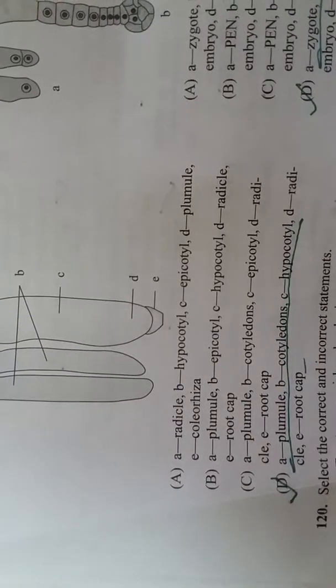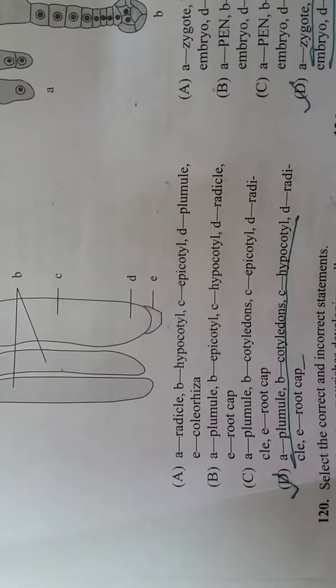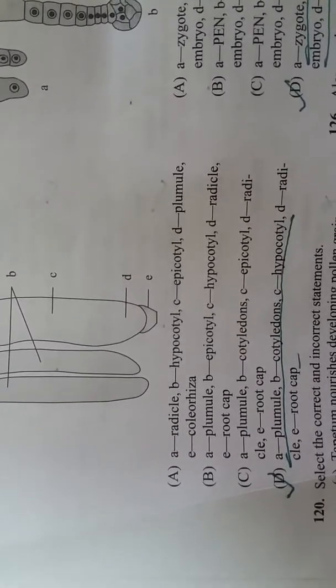A is plumule, B is cotyledon, C is hypocotyl, D is radicle, and E is root cap.